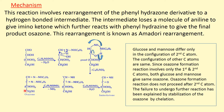From glucose, this is glucose-osazone. Glucose and mannose differ only in the configuration of the second carbon atom; the configuration of the other carbon atoms in these two molecules is the same. Since the osazone formation reaction involves only the first and second carbon atoms, both glucose and mannose give the same osazone. Moreover, after the osazone formation, the molecule is stabilized by chelation, so the osazone formation reaction does not proceed further after the second carbon atom. The failure to undergo further reaction has been explained by stabilization of the osazone by chelation.